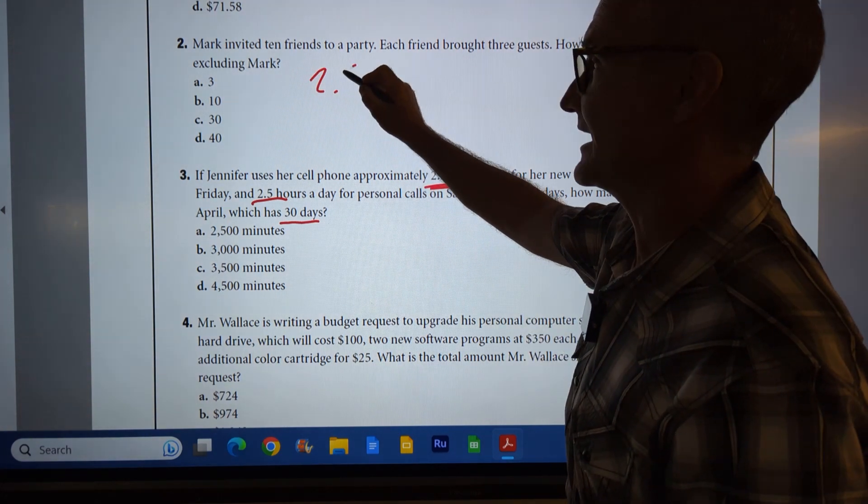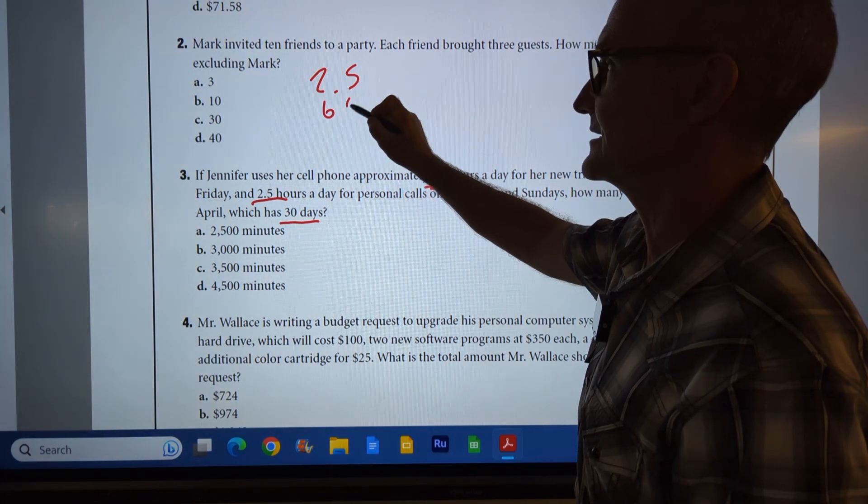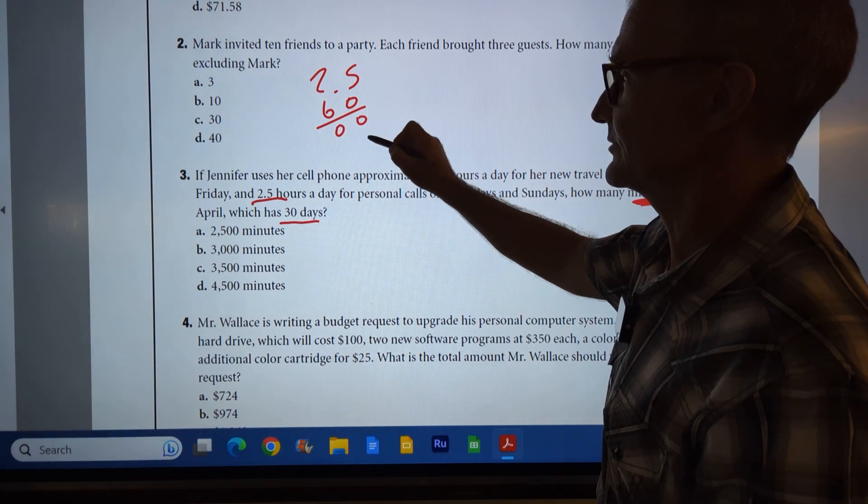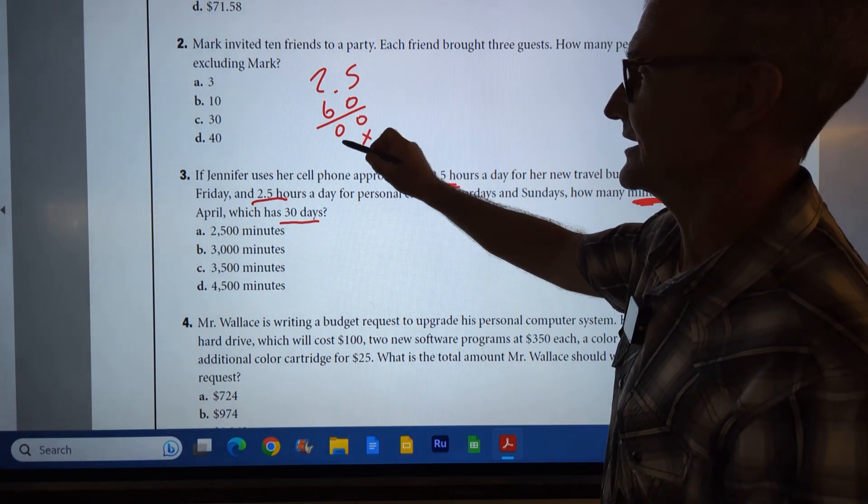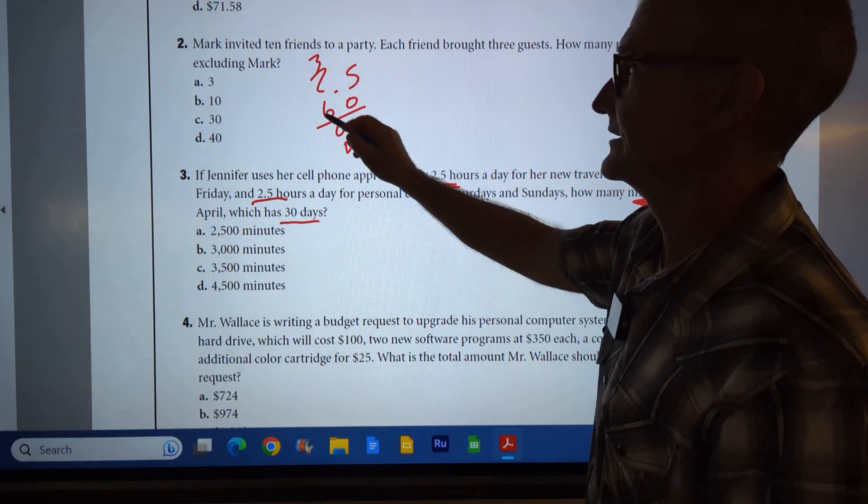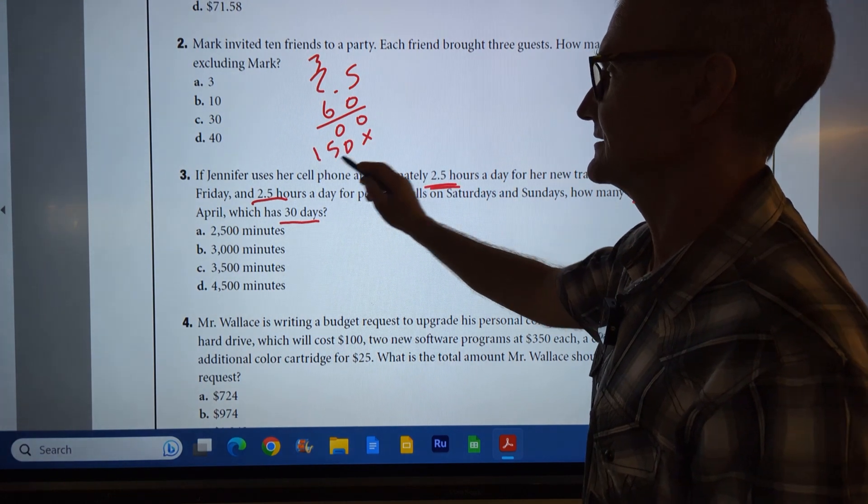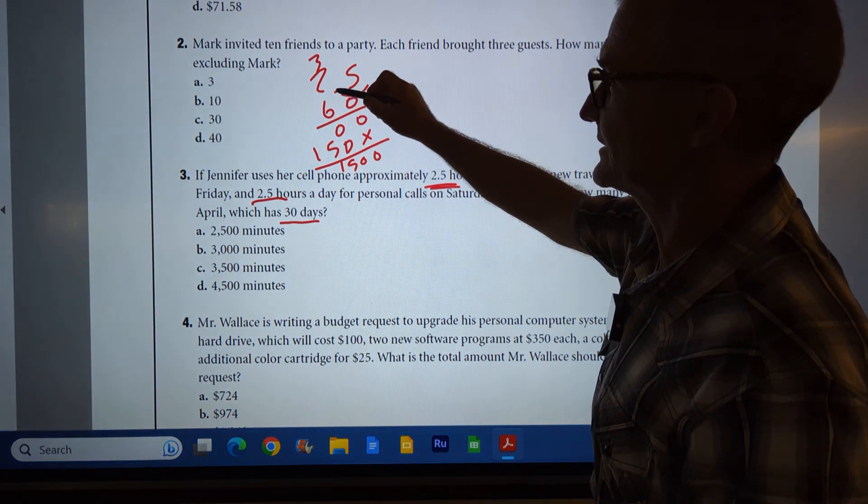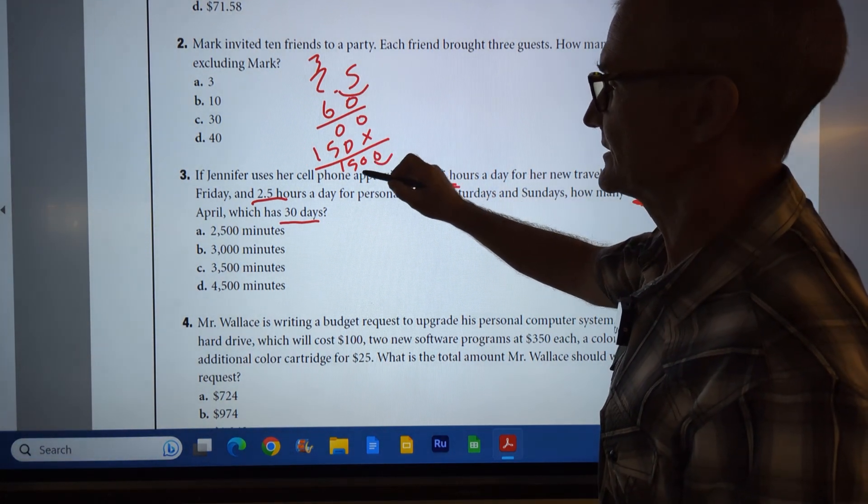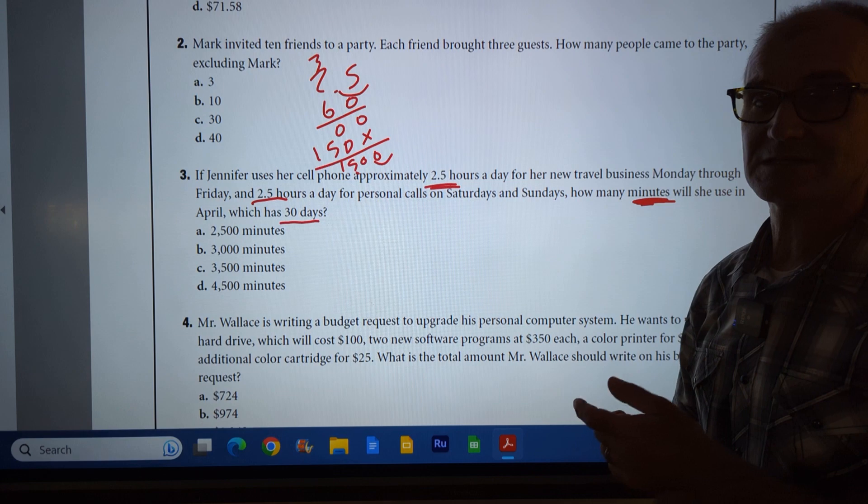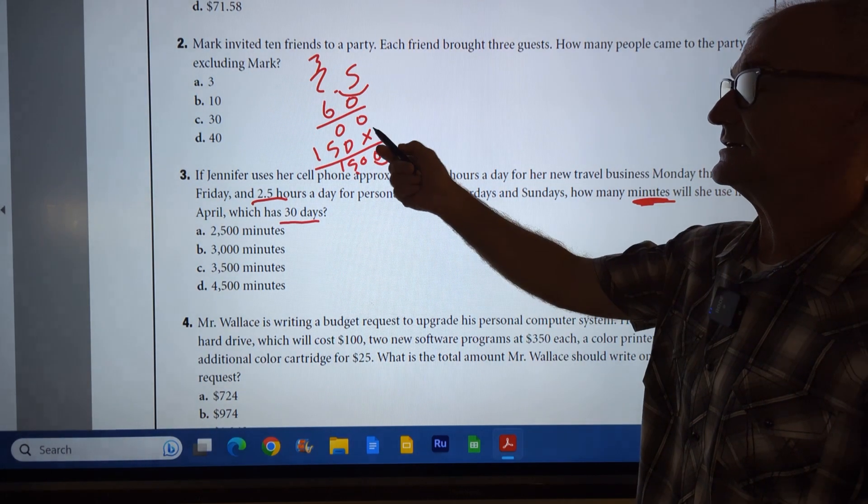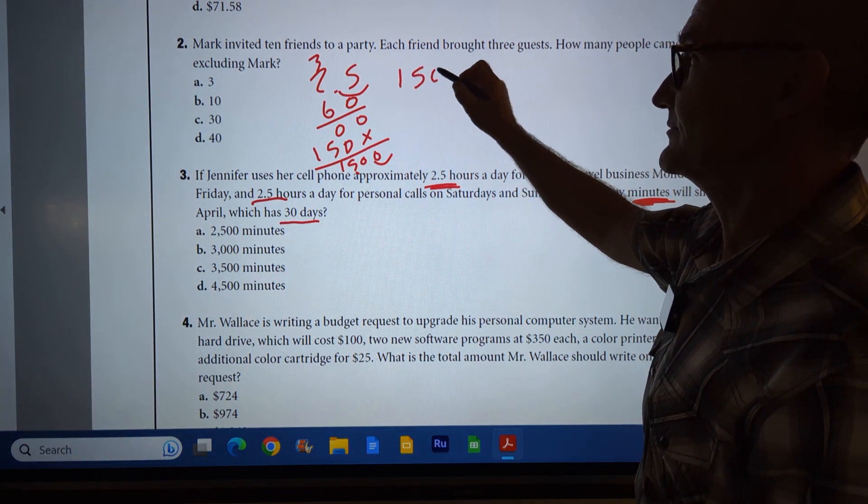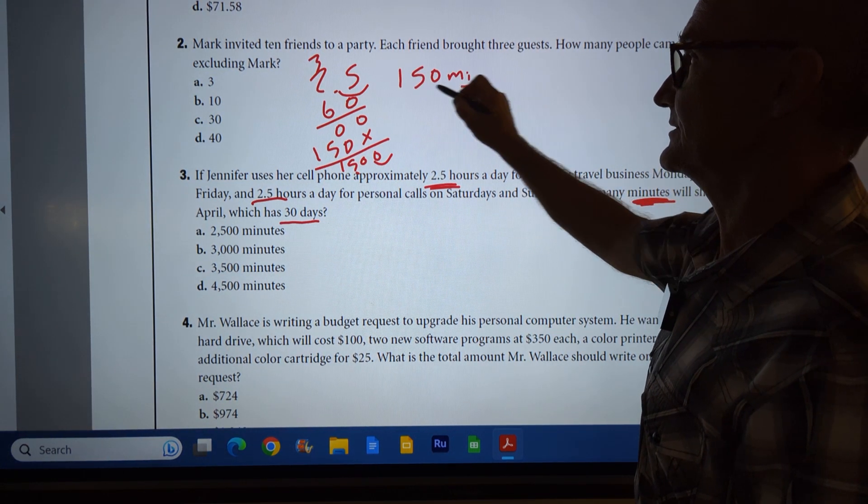However, the fact that she uses it two and a half hours, and I'm looking for minutes, I got to convert my hours to minutes to start with. So 2.5 hours times 60 minutes in an hour. Zero, zero, placeholder, six times five is 30, carry the three, 12, 15. So then I have one, five, zero, zero, one place over, one place over, so 150 minutes per day, right? What I've done here, I've converted the hours times 60 minutes to get 150 minutes per day.